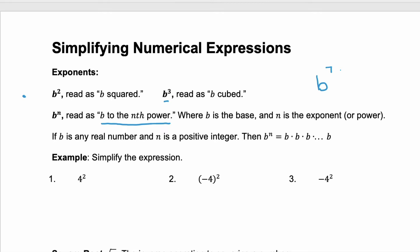b is always the base, and n is your exponent, or the power. b is any real number, and n is a positive integer. Then b to the power of n would be b multiplied by itself n times.